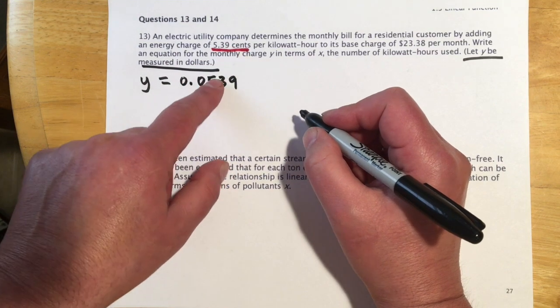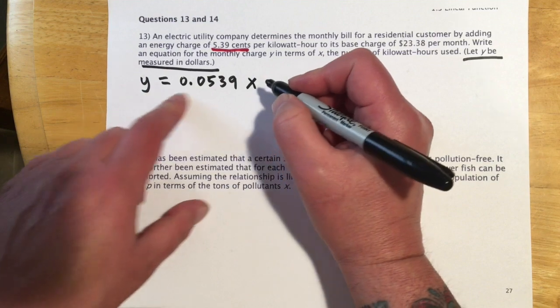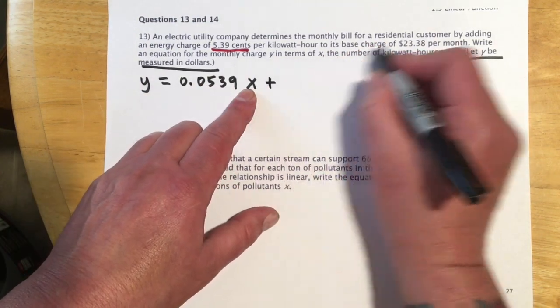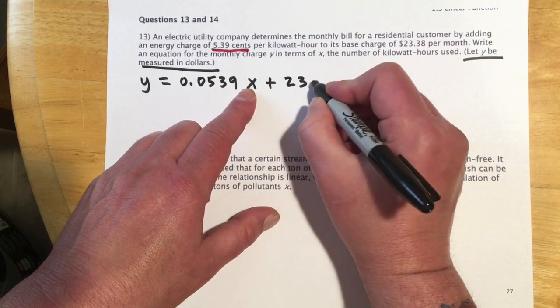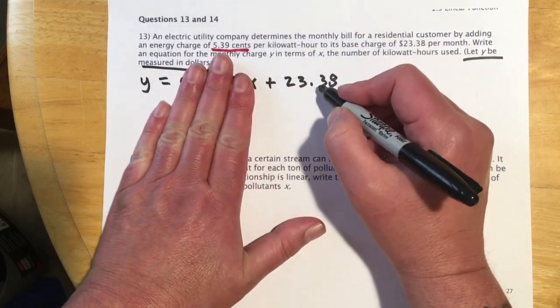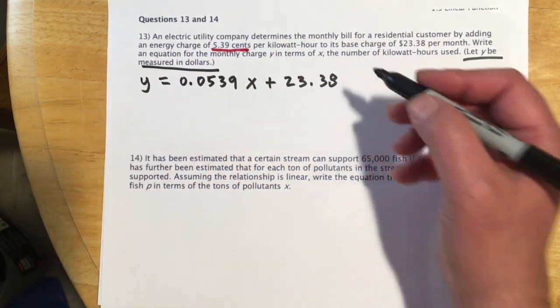So we have to get this in terms of dollars since we're going to add dollars to it. We want y to be in terms of dollars. So 5 cents for every kilowatt hour used, and then plus that base charge of $23.38. So if we use no energy whatsoever, we still have to pay them the 23. And then for every hour we use thereafter, we're paying them 5 cents.